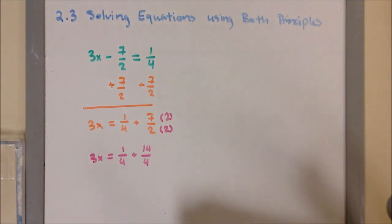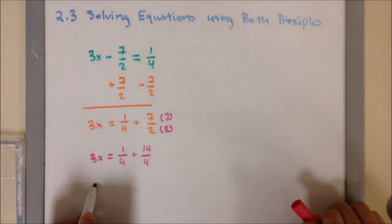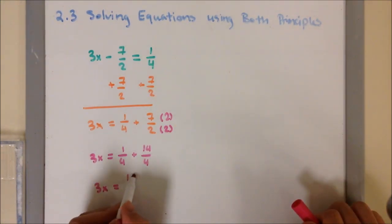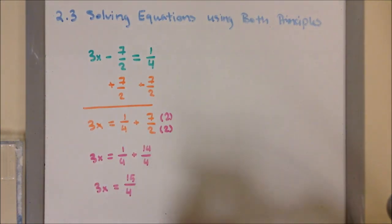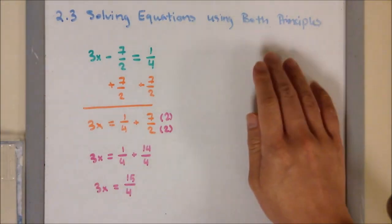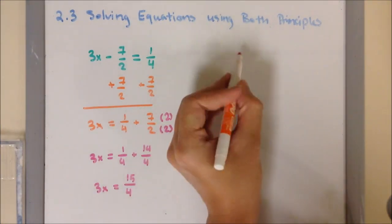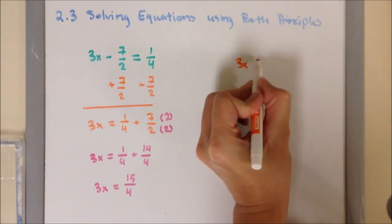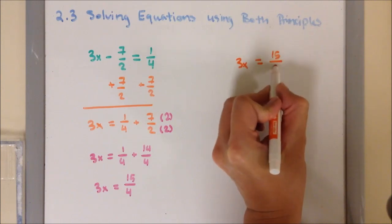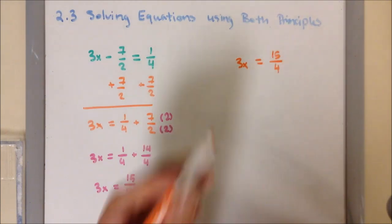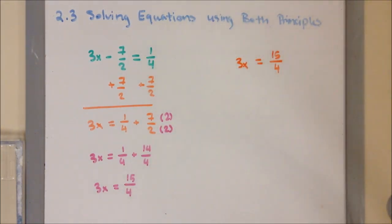Once we have the same denominator, it's going to be 3x equals 15 over 4. I'm going to write it up here: 3x equals 15 over 4. So I'm finished combining these fractions.